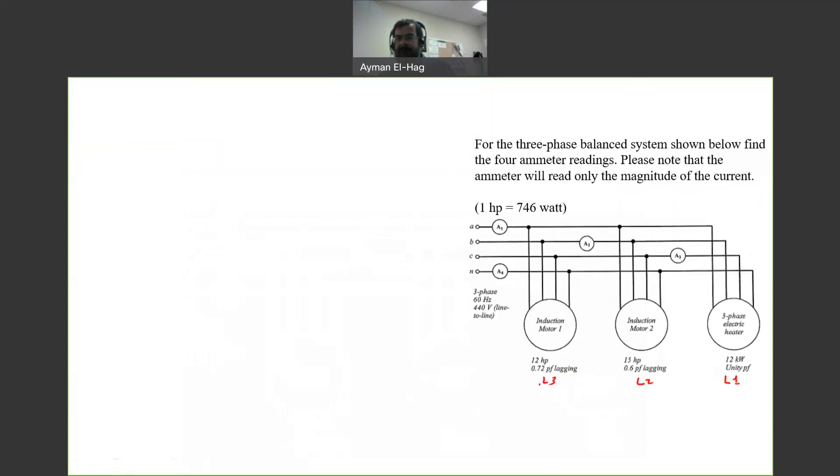We are asked to find the ammeter readings a3, a2, a1, and a4. So a1 is in phase a, a2 in phase b, a3 in phase c, and a4 in the neutral. Definitely this is a Y-connected load because we have four wires.